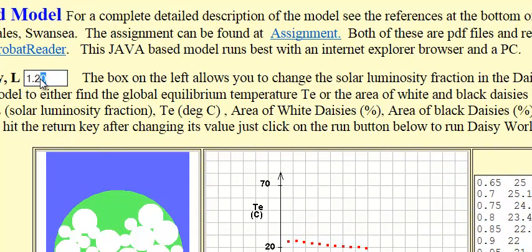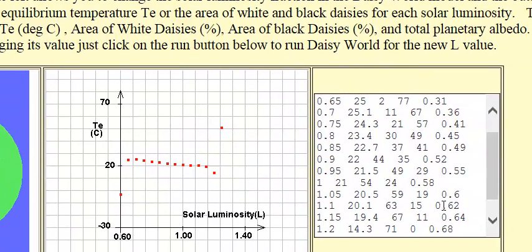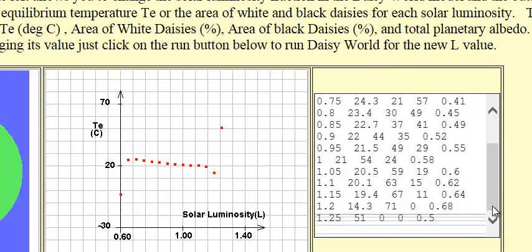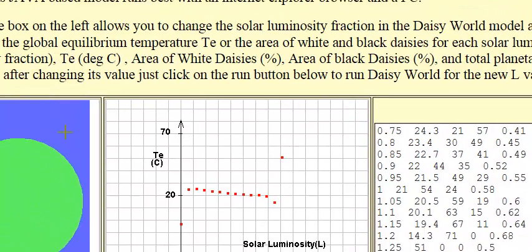And 1.25. Notice the planet just died at 1.25. The temperature shot up drastically from 14 to 51, and no white or black daisies. And we're back to a bare ground albedo of 0.5.